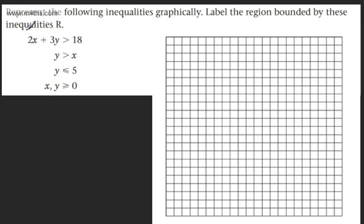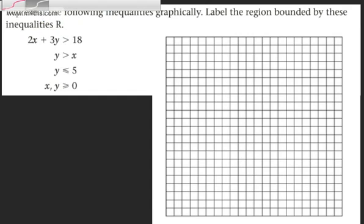I'm going to graph the first line: 2x plus 3y equals 18. There are a couple of ways you could do this. The first way is to write it in the form y equals mx plus c. The second way is to set x to 0 and solve for y, and then set y to 0 and solve for x. That's the method I'm going to take.